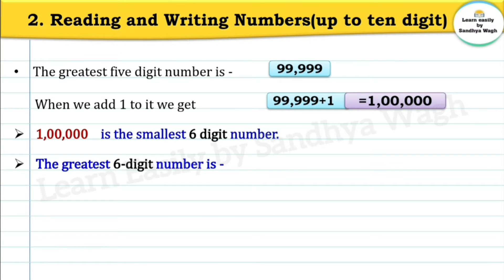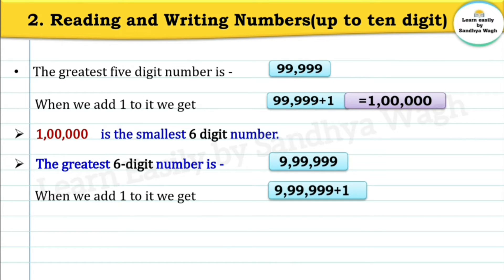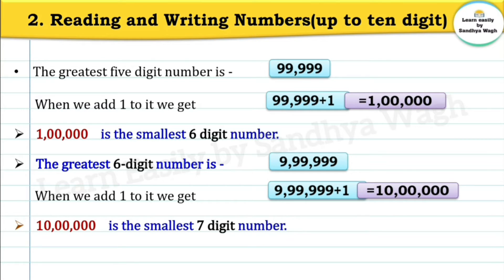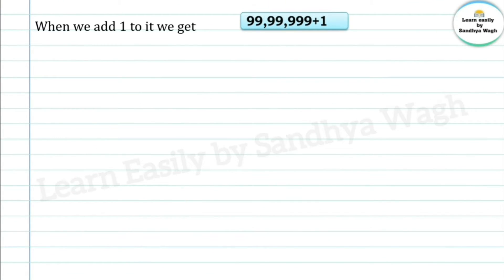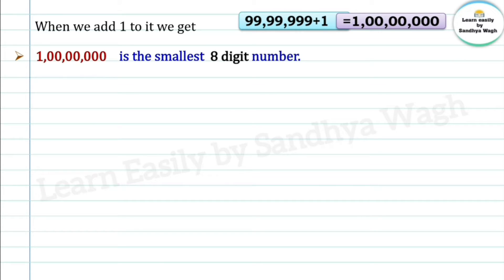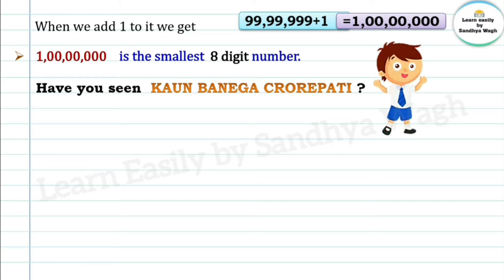Similarly, the greatest six-digit number is six nines. When we add one to it, we get one followed by six zeros — that is the smallest seven-digit number. The greatest seven-digit number is seven nines, and when we add one to it we get one followed by seven zeros, which is the smallest eight-digit number.